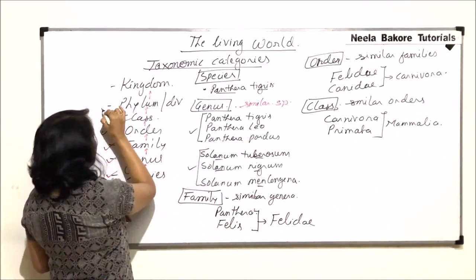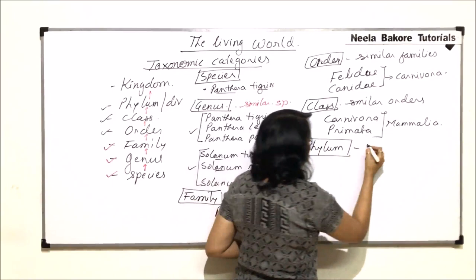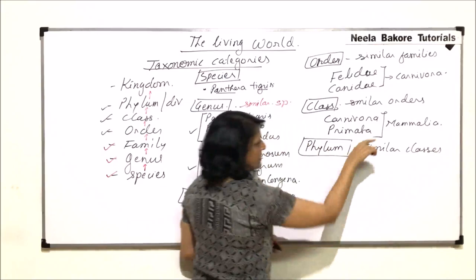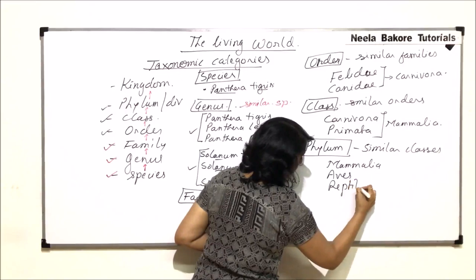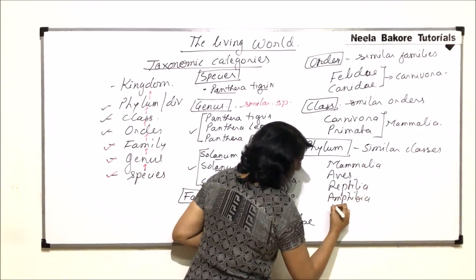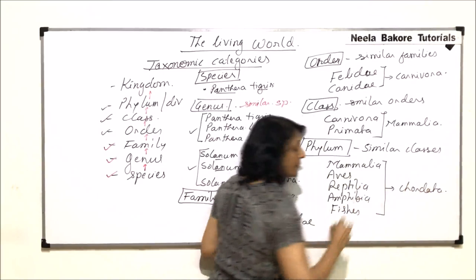Similar classes would be placed in the same phylum. After class, the next category is going to be phylum. What is going to be included in phylum? Similar classes. Let us take Mammalia, Aves, Reptilia, Amphibia, and fishes or Pisces. All these classes are placed in one phylum, that is Chordata.